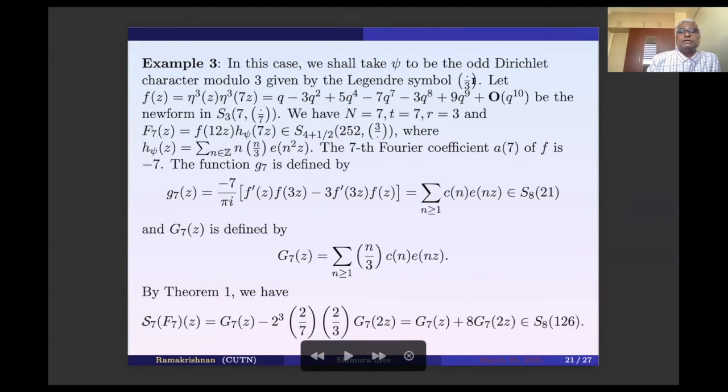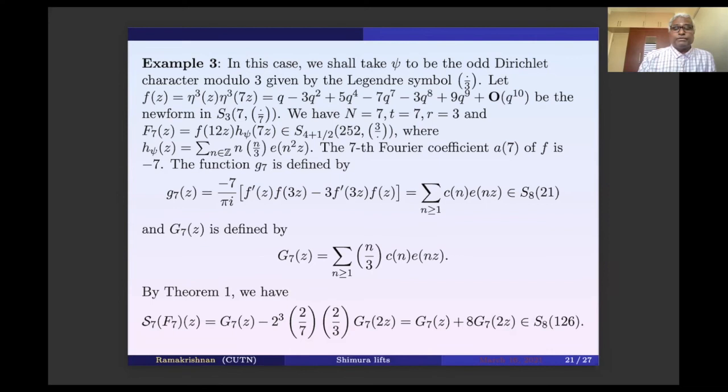Example 3: odd character psi = (dot/3), modulo 3. Take capital n=7, t=7, r=3. Since psi is odd, we take the derivative combination for g. The seventh Shimura image of F_7 is g_7 - 2^(k+nu-1)*psi(2)*chi(2)*g_7(2z). Here the signs work out to give g_7(z) plus a constant times g_7(2z).